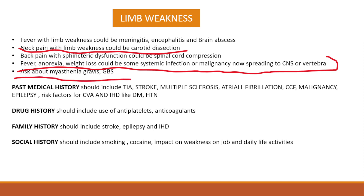Then we will ask about myasthenia gravis and GBS. For myasthenia, we will ask the patient: do you feel weak by the evening time? For GBS, we will ask: do you have pain and pins-and-needles sensation in the lower limbs followed by ascending weakness upward? This will cover our limb weakness topic from an etiology point of view.